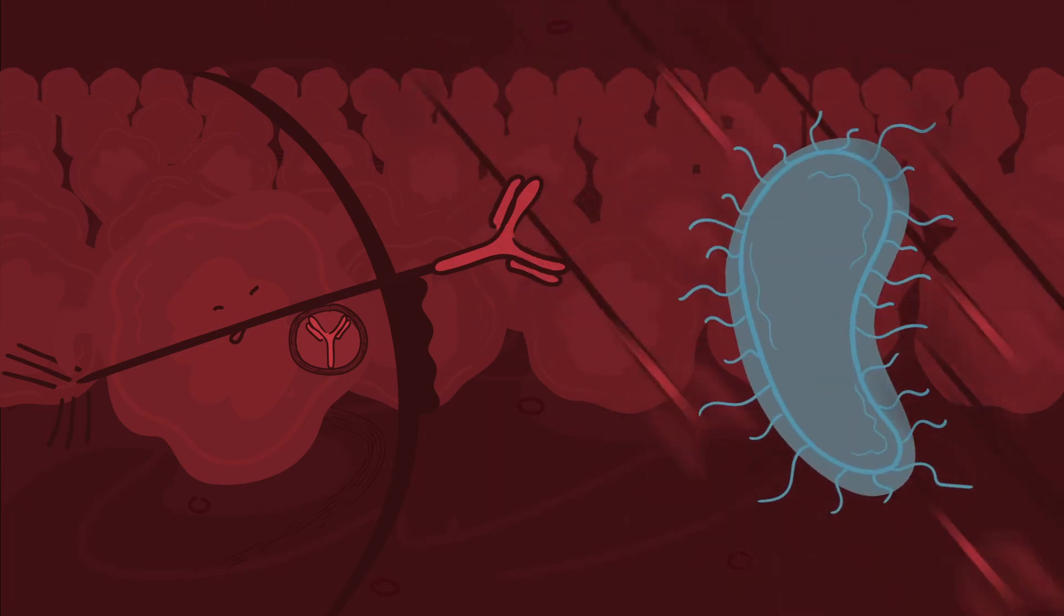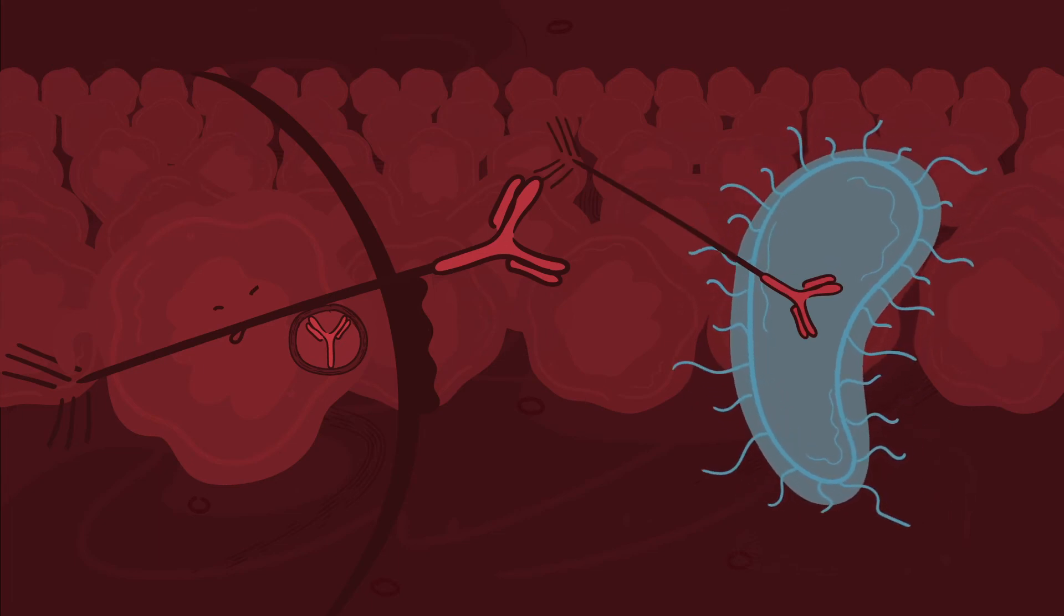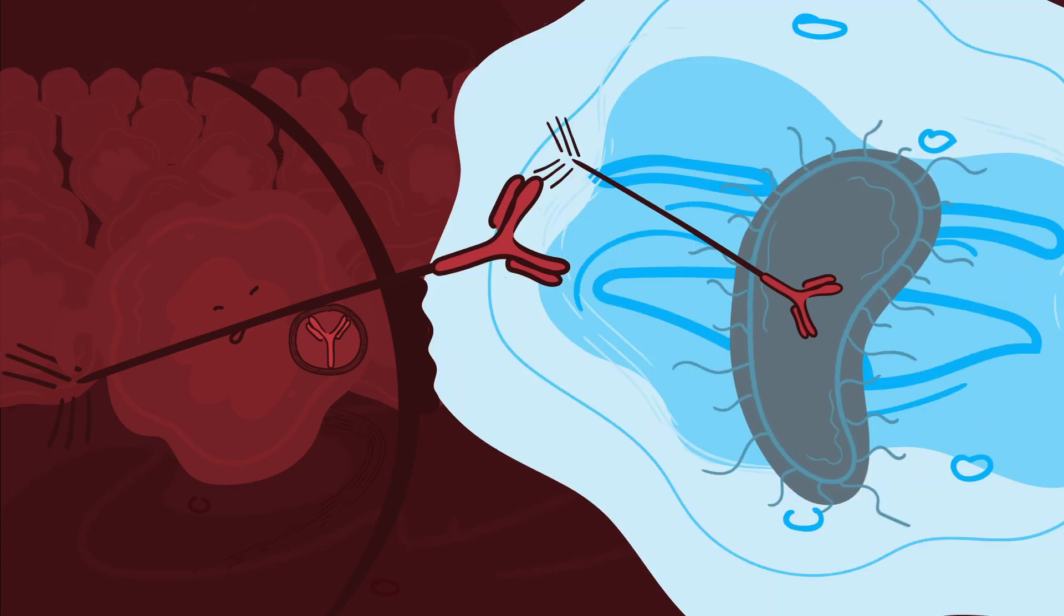The antibodies are either released or expressed on the cell surface. When an antibody binds its target antigen, it will alert nearby immune cells and promote processes such as phagocytosis and elimination of the pathogen.